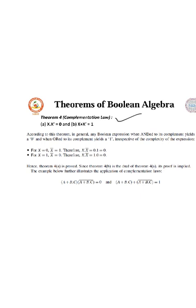Coming into theorem 4, the complementation law. It states: x into x bar is equal to 0, and x plus x bar is equal to 1. Any Boolean expression ANDed with its complement yields 0; when ORed with its complement, it yields 1. For theorem 4a, substitute x equal to 0, so x bar equals 1. Therefore x into x bar equals 0 into 1, which is 0. Then with x equal to 1, x bar equals 0, and x into x bar is again equal to 0. Theorem 4a is proved. Since theorem 4b is the dual of theorem 4a, its proof is implied.